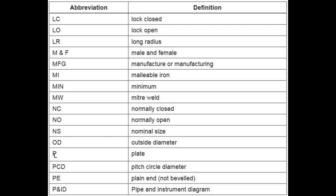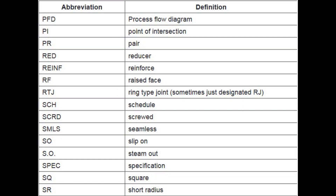NC stands for Normally Closed. NO stands for Normally Open. NS stands for Nominal Size. OD stands for Outside Diameter. PL stands for Plate. PCD stands for Pitch Circle Diameter. PE stands for Plain End, not beveled. PNID stands for Pipe and Instrument Diagram. PFD stands for Process Flow Diagram. PI stands for Point of Intersection.